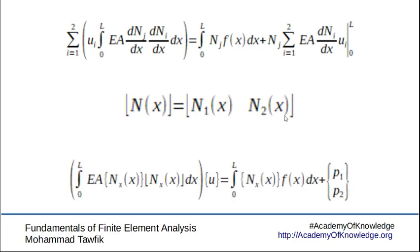If we use these row vectors back into the original equation of Galerkin, we will find that the derivative of the N vector will appear column multiplied by the row, which will give us a matrix. On the right hand side we will have the column vector multiplied by the distributed load f of x, which will create our generalized force vector plus the effect of the concentrated forces.